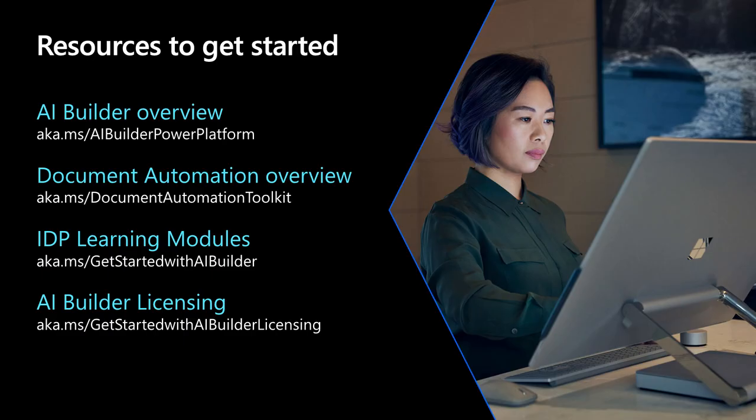In conclusion, we hope we've given you a complete overview of how to automate document processing with AI Builder and Power Automate. All you need to do is think of the different types of documents in your company used for everyday processes and how you can generate cost savings by automating those tasks. Resources available include an overview of AI Builder and the document automation solution, learning courses to guide you step-by-step in setting up your first custom form processing model, and tutorials on AI Builder licensing. Thank you very much for joining this webinar, and we hope to see you soon with Power Automate and AI Builder.